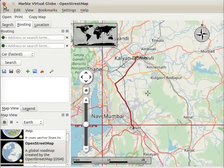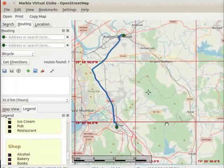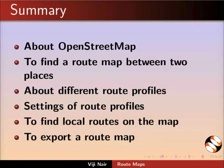Let us close this file. We will learn more about route maps in the upcoming tutorials. Let us summarize. In this tutorial, we have learnt about OpenStreetMap, how to find a route map between two places, about different route profiles, settings of route profiles, how to find local routes on the map, and how to export a route map.